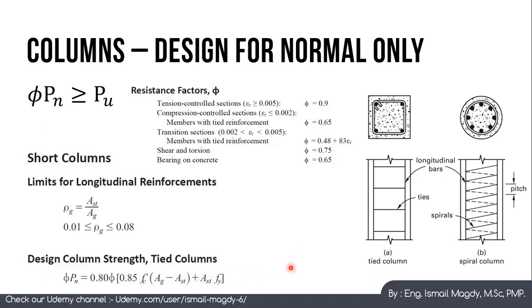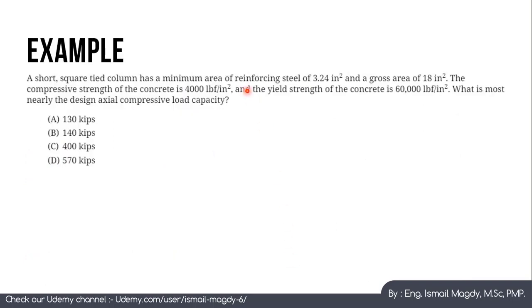So let's have an example on this. Here we have a short square tied column has a minimum area of reinforcement steel of 3.24 inches square, this is the area steel, and the gross area of 18 inches square. The compressive strength of the concrete is 4000 psi, this is the Fc prime, and the yield strength of the concrete is 60,000 psi. What is most nearly the design axial compressive load capacity?